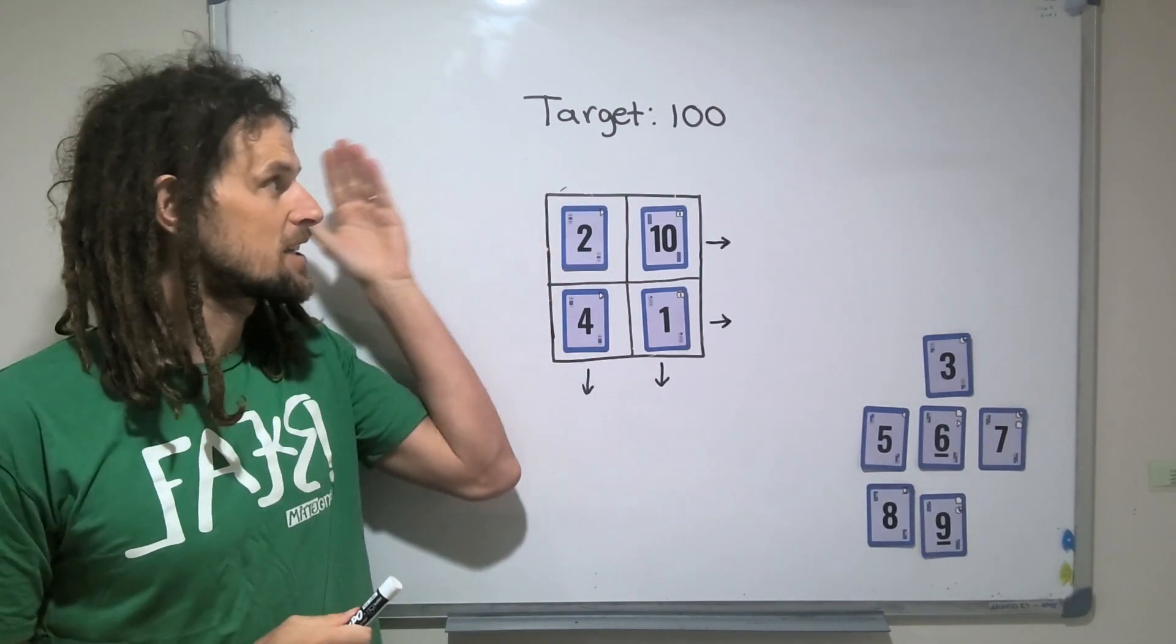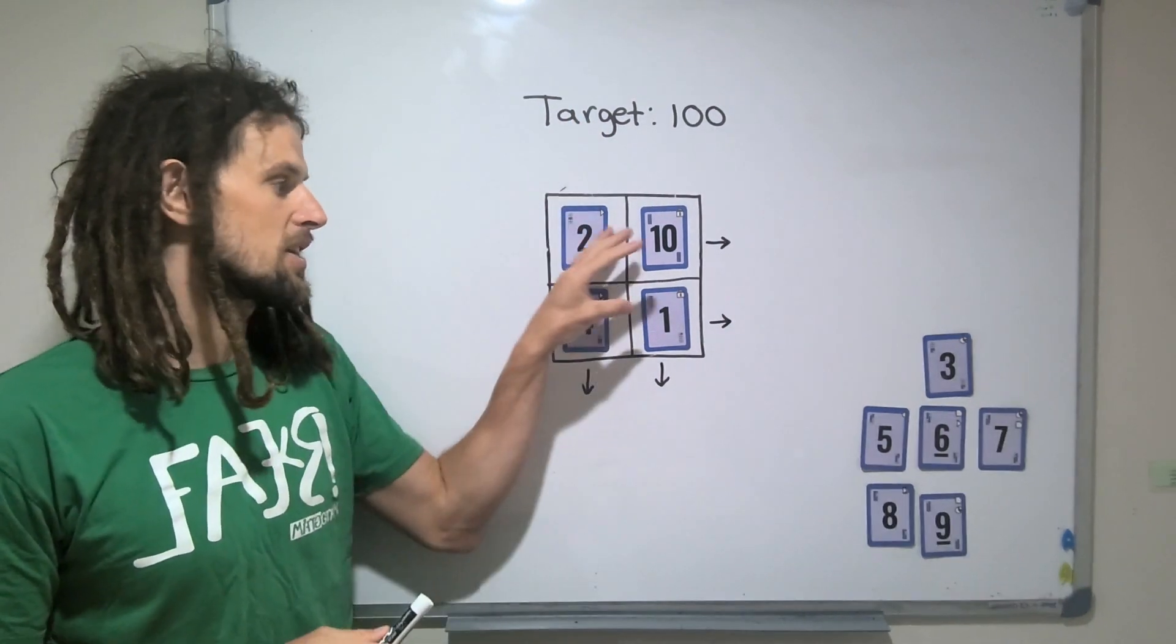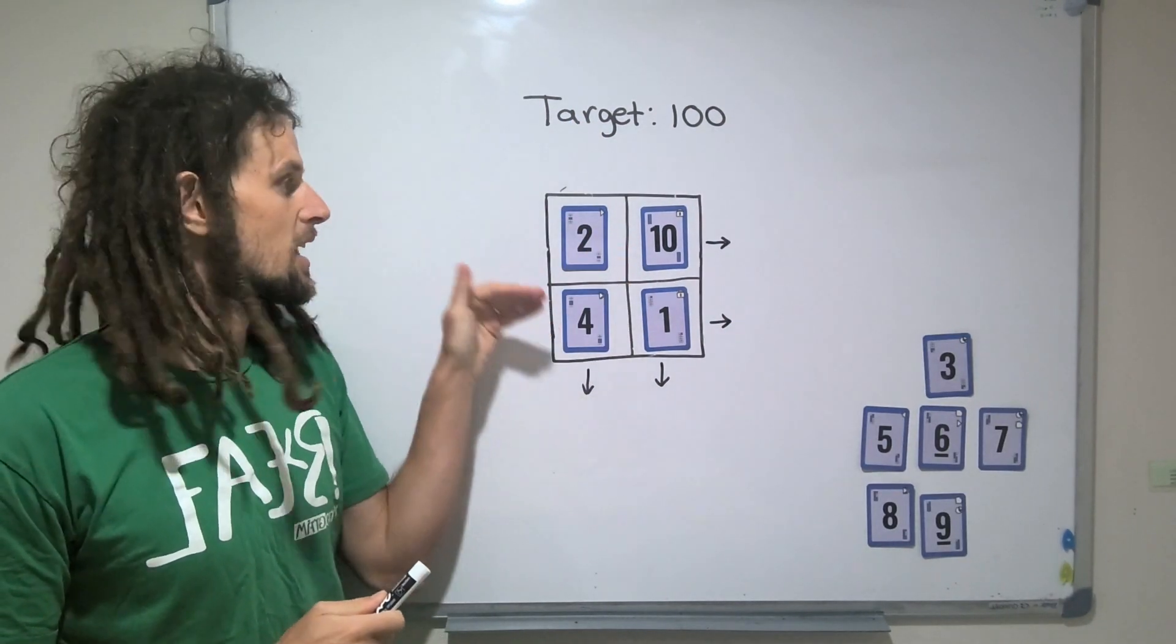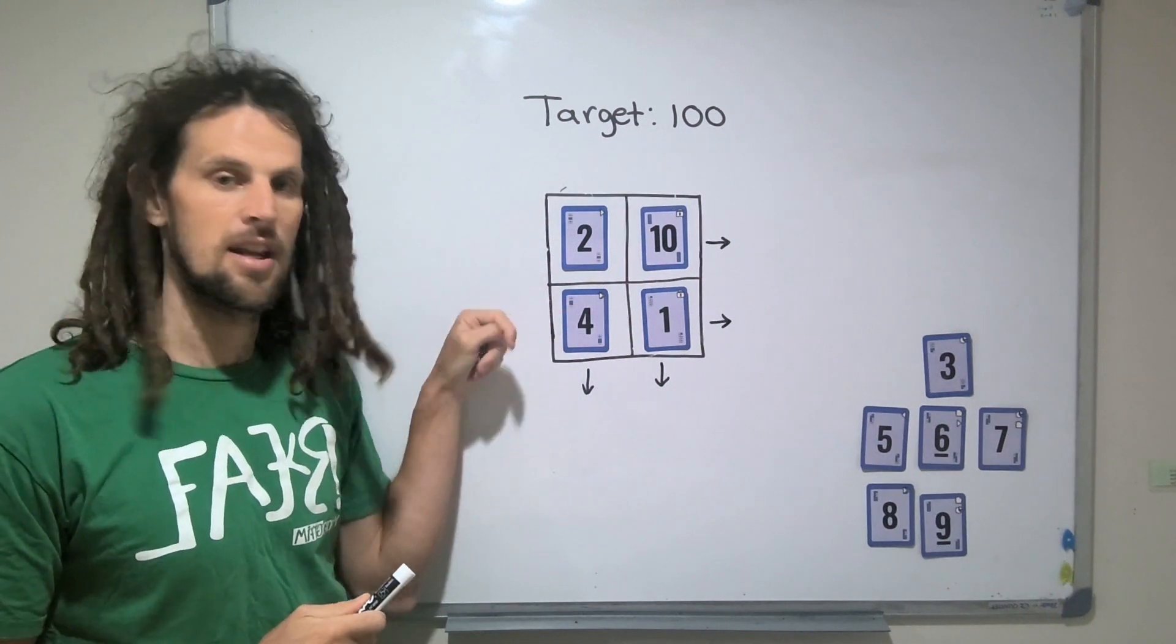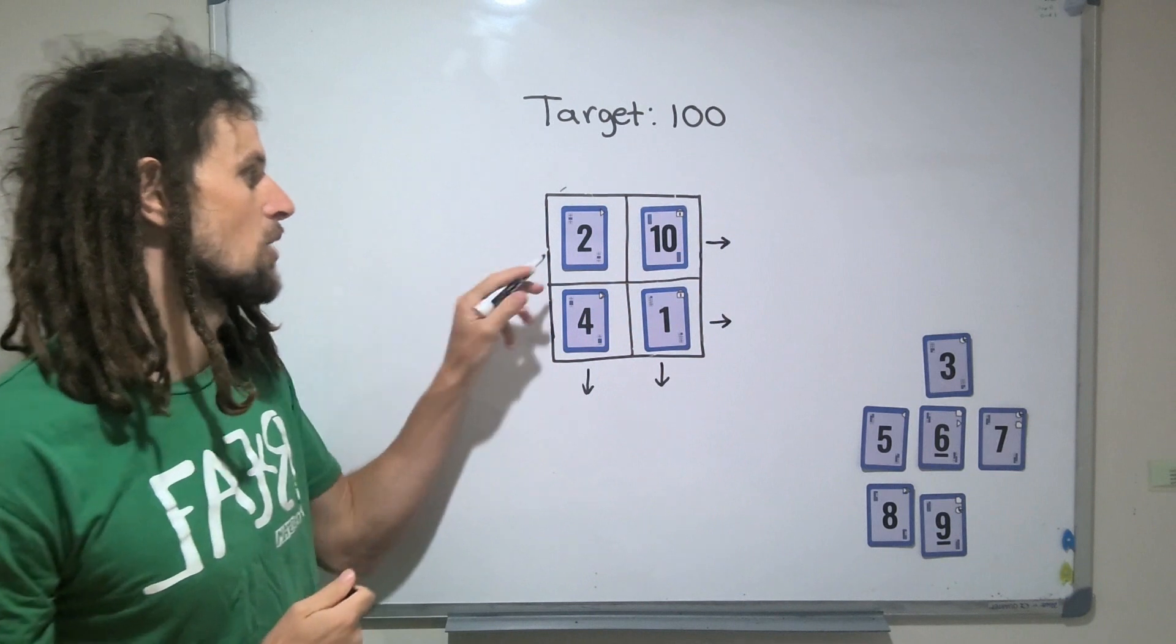How the game works is you need to get to a target number, in this case 100. And you're placing the numbers in a grid, and this grid in particular has four two-digit numbers that will be formed as you'd write them.